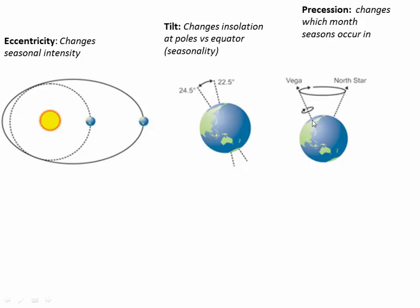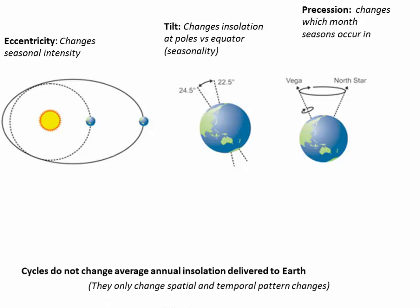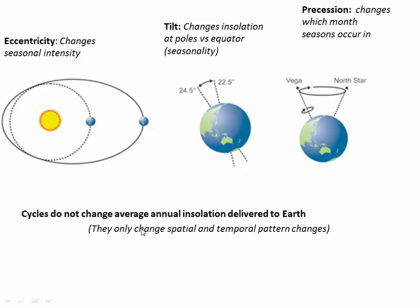Precession changes what month the different seasons occur in. If the tilt's not changing but the tilt direction is changing, it basically changes which point in the orbit the Earth is pointing towards or away from the Sun, but it doesn't actually change the magnitude of that tilt. A key point is that Milankovitch cycles don't actually change the average annual insolation delivered to Earth — that's constant regardless. But they have a strong effect on the spatial and temporal pattern of when and where the Sun's energy hits Earth.